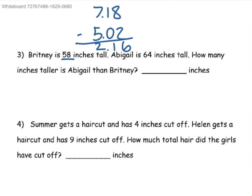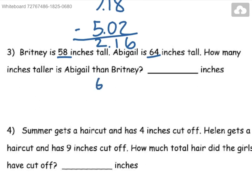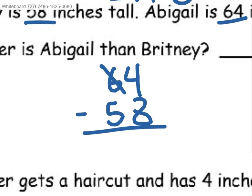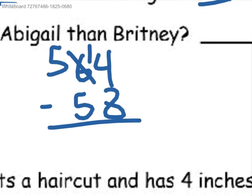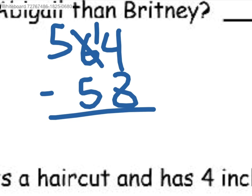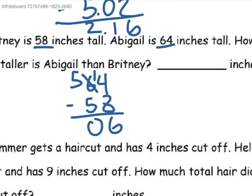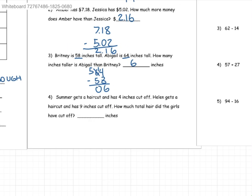Brittany is 58 inches tall. Abigail is 64 inches tall. How many inches taller is Abigail than Brittany? So Abigail is 64 and Brittany is 58. So since 4 is less than 8, you take away 1 from here, so that turned into a 5. Put the 1 over here so it's 14 instead of 4. And then 14 minus 8 would be 6. 5 minus 5 is 0. So Abigail is 6 inches taller than Brittany.